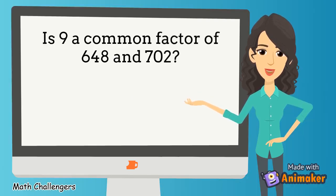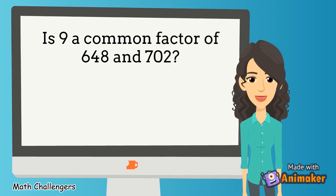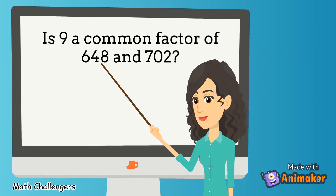Is 9 a common factor of 648 and 702? To answer this, apply the divisibility rule for 9. Is 648 divisible by 9? The sum of the digits is 18, so it is divisible by 9.